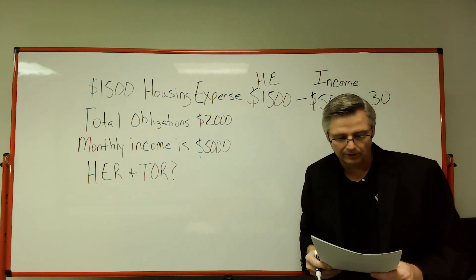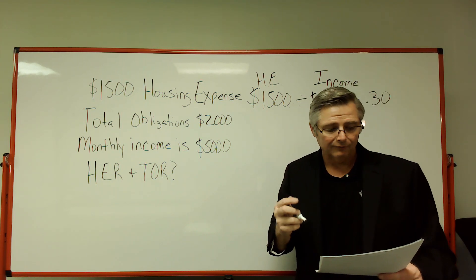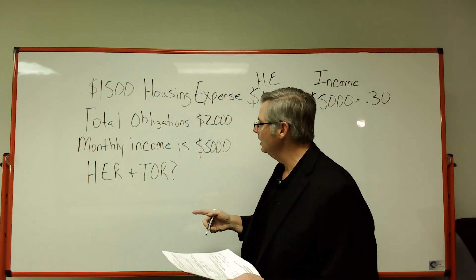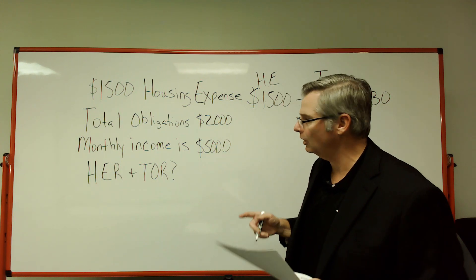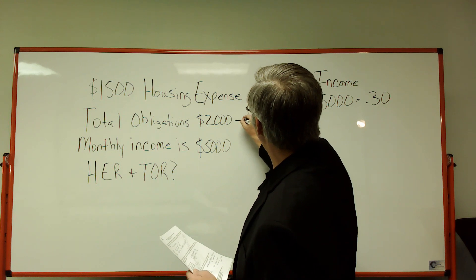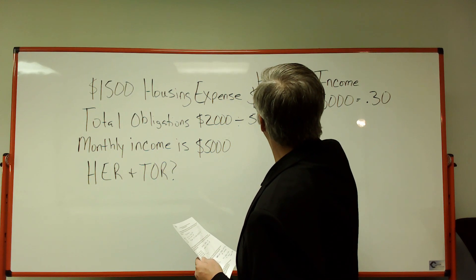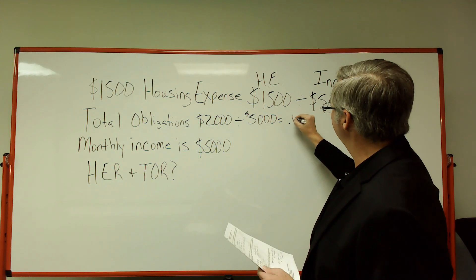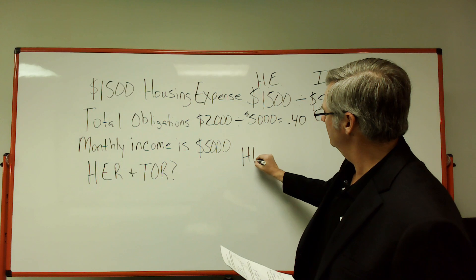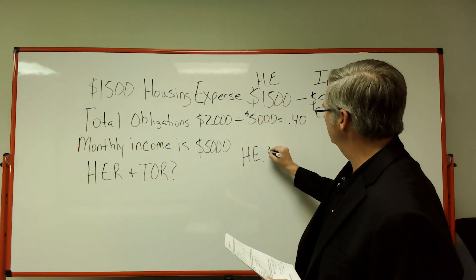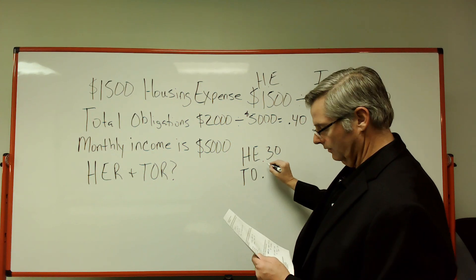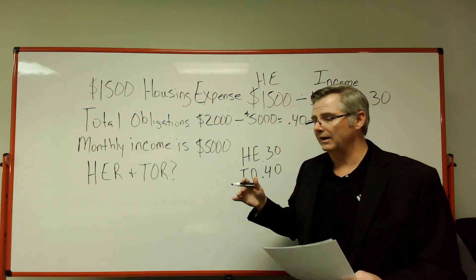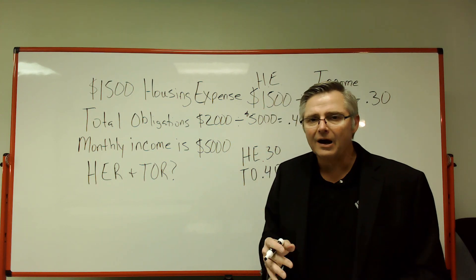Looking at the test answers, you'll see that two of them have 30% for HE. Now for the total obligation ratio — keep it simple. Take $2,000 in total obligations and divide by the income of $5,000. That gives us 0.40. So the housing expense ratio is 0.30 and the total obligation ratio is 0.40, just like that.